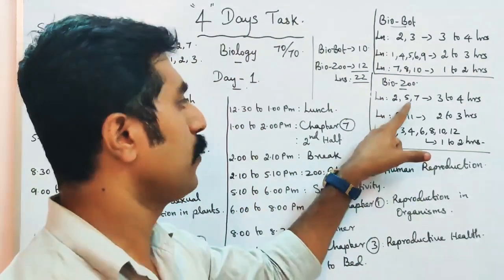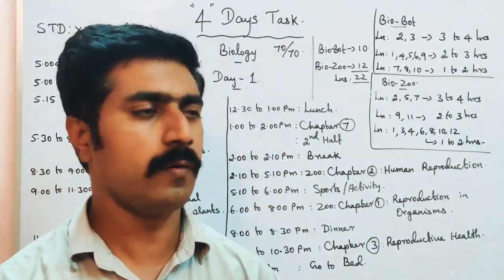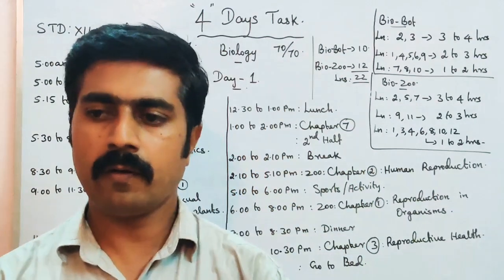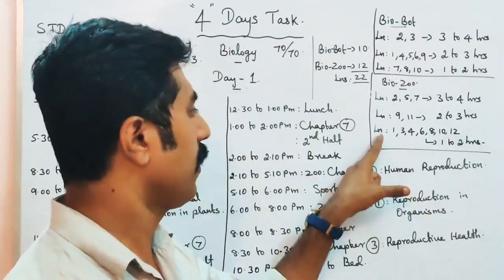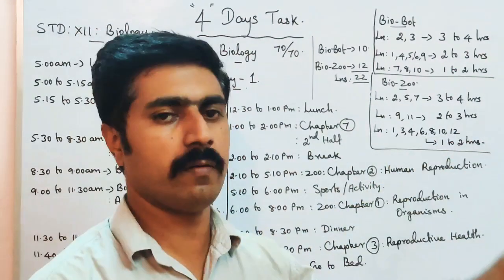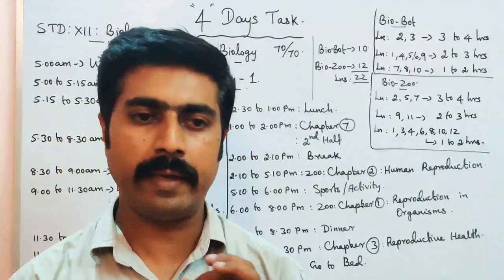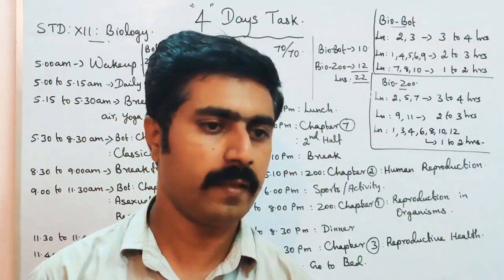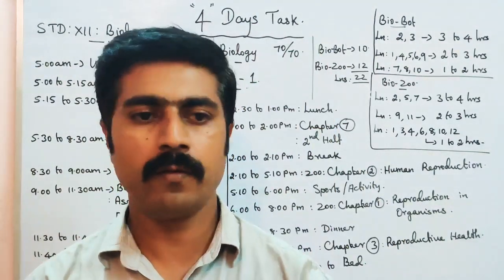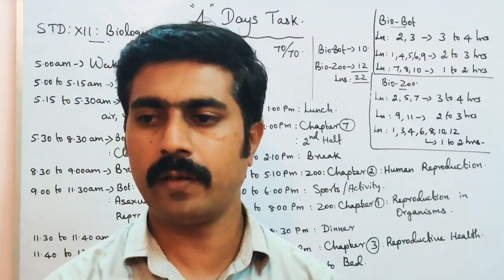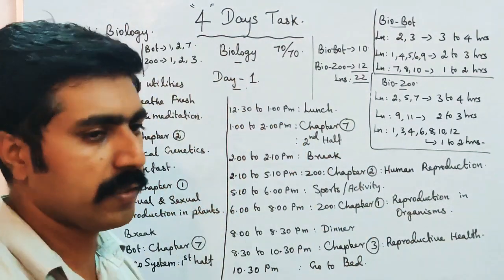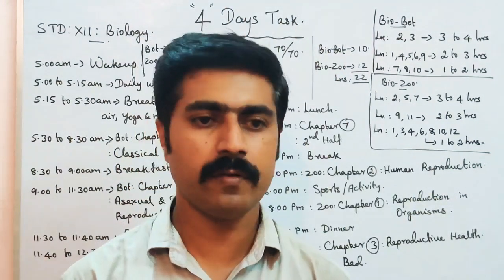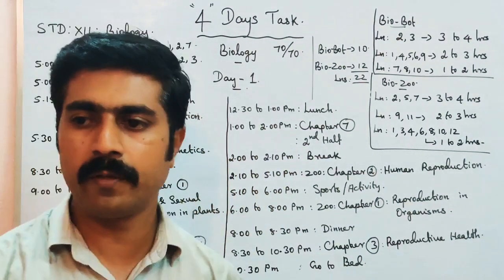For Biozoology: Chapters 2, 5, and 7 require 3 hours per chapter. Lessons 9 and 11 require 2 to 3 hours. Lessons 1, 3, 4, 6, 8, 10, and 12 require 1 hour each.